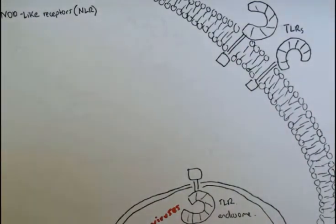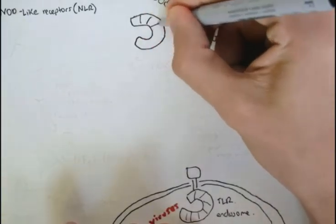The TLRs are found in the cell membrane, whereas the NOD-like receptors are found intracellularly in the cytosol.